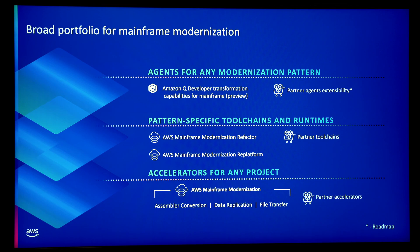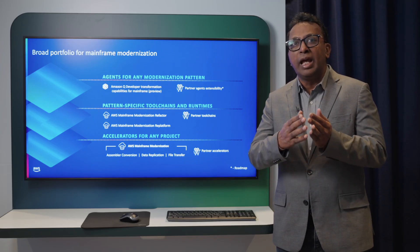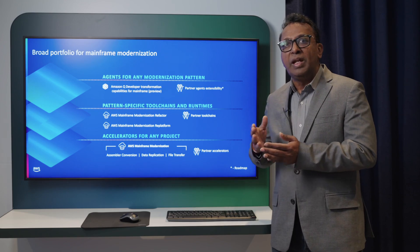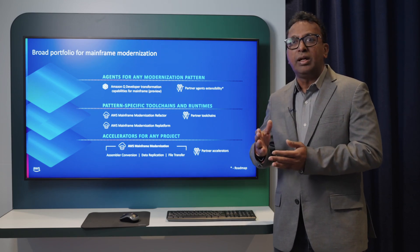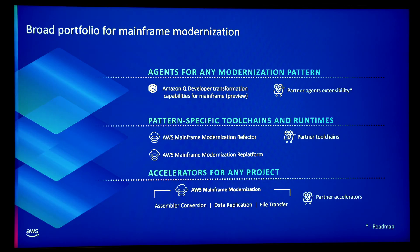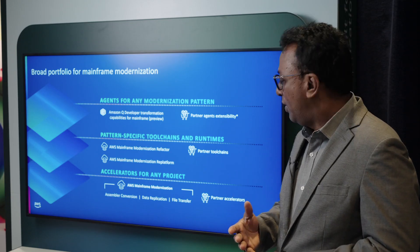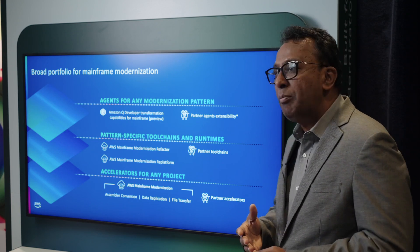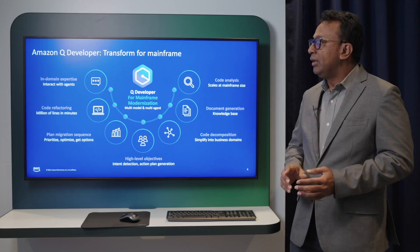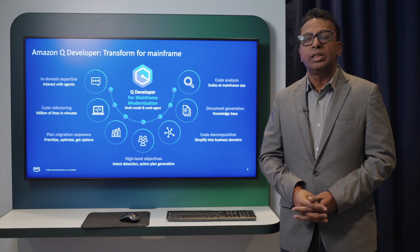At refactoring, we have AWS BlueAge, which will help you migrate the code from mainframe into Java-based applications. With generative AI, we have announced Q Developer and Q Transform for mainframe, which is a framework currently in preview. It can reimagine the code and be applied for any mainframe pattern. We have also announced partner extension capabilities on the roadmap.